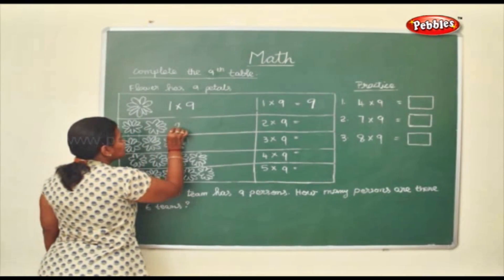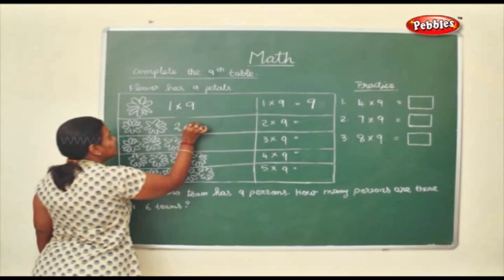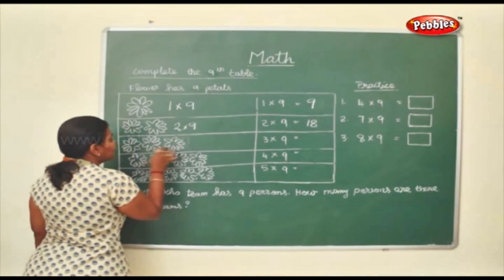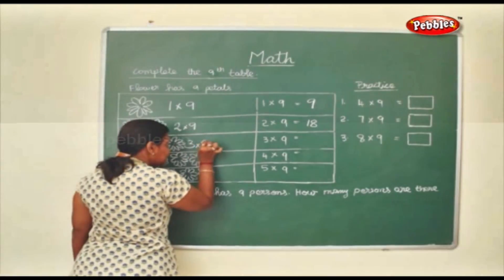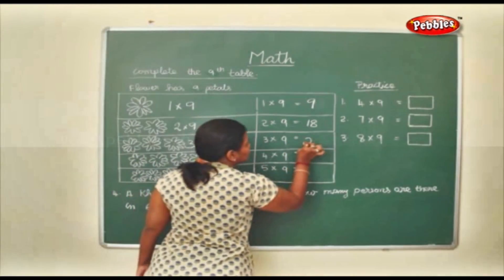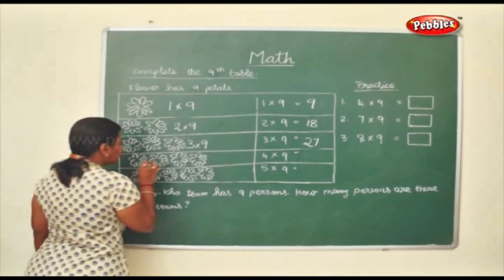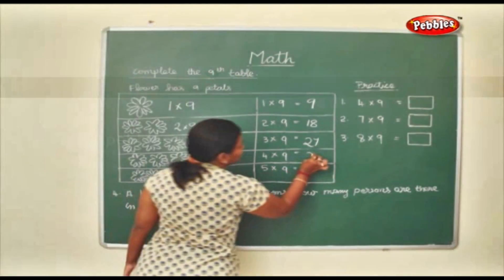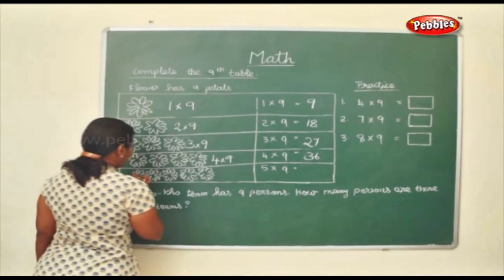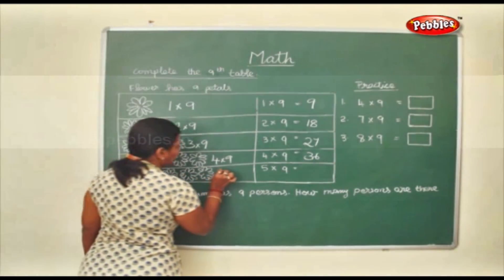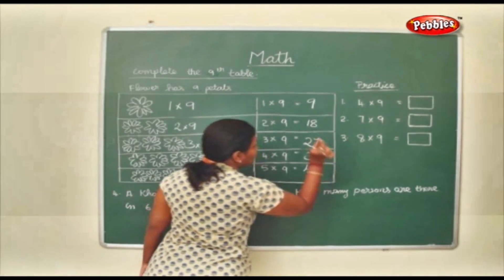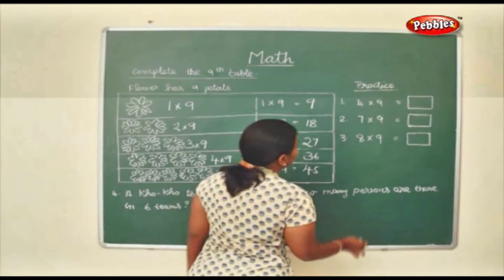2 flowers into 9 petals. 2 times 9. So it will be 18. Here 3 flowers into 9 petals which will give you 27. Here 4 flowers into 9 petals which will give you 36. Here 5 flowers into 9 petals.